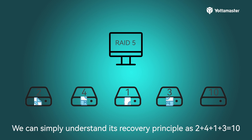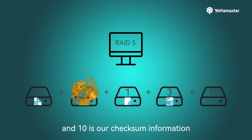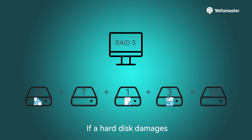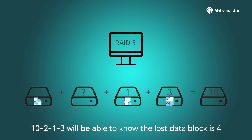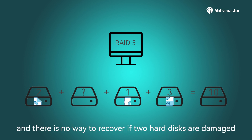We can understand the recovery principle with a simple example: 2 + 4 + 1 + 3 = 10, where 2, 4, 1, and 3 are the data blocks stored separately, and 10 is the checksum. If a hard disk is damaged, we calculate 10 - 2 - 1 - 3 to recover the lost data block, which is 4. Therefore, in RAID 5 mode, only one hard disk can be damaged at a time — there is no way to recover if two hard disks are damaged simultaneously.